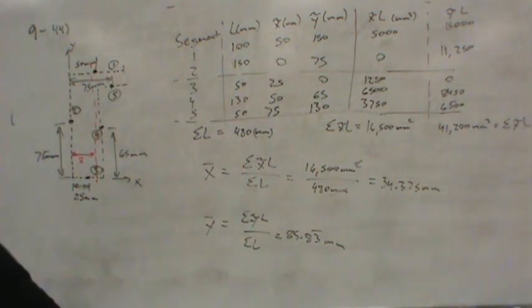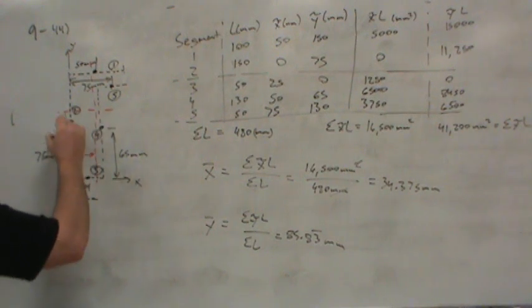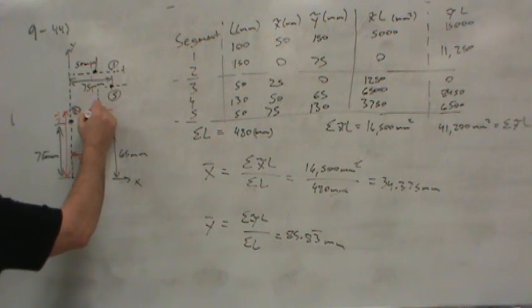This comes out to 85.83 repeating millimeters. Now that location is going to be somewhere above 75, maybe right about there. And so that distance, y-bar, allows us to locate the centroid.